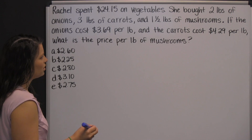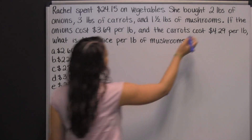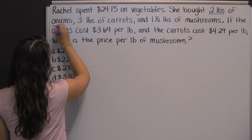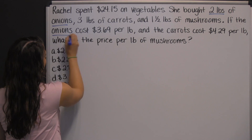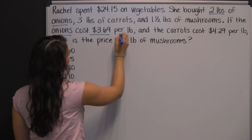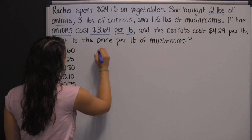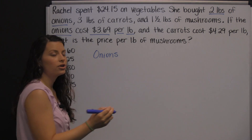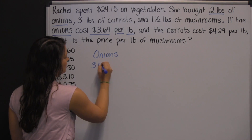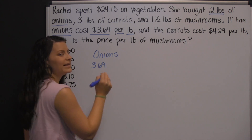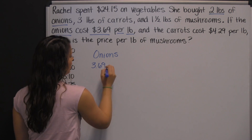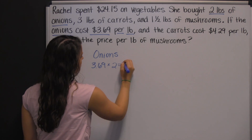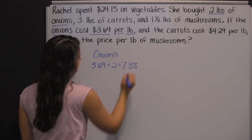Let's start with our onions. She bought two pounds of onions, and the onions were three dollars and sixty-nine cents per pound. So her onions cost three sixty-nine for each pound she bought — times two — which is seven dollars and thirty-eight cents.